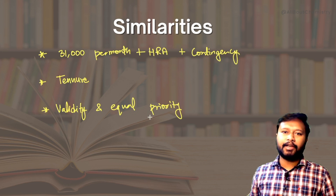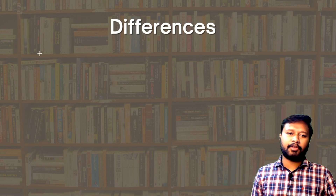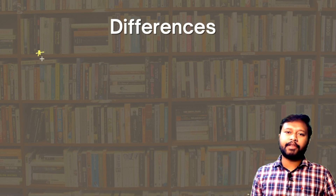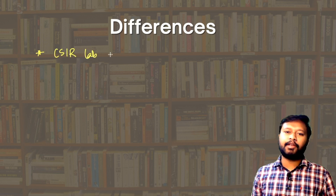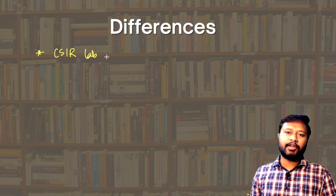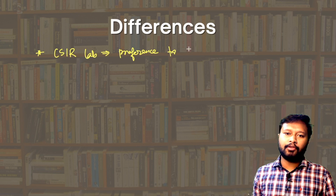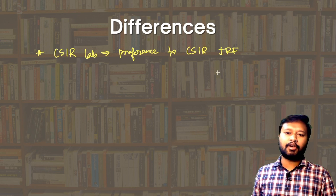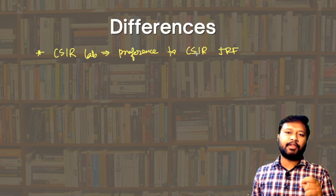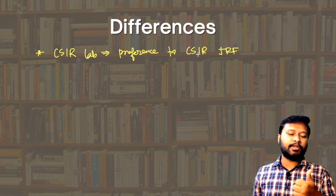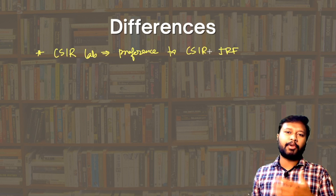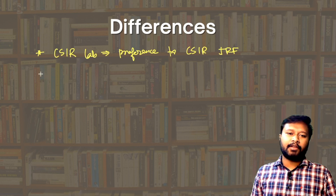Now let's talk about the differences between them. The first difference is that when you apply for CSIR labs, preference is given to CSIR JRF over UGC JRF. It's not that a UGC JRF candidate cannot apply, but if there are two candidates — one with UGC JRF and one with CSIR JRF — the CSIR lab will give more priority to the CSIR JRF candidate.